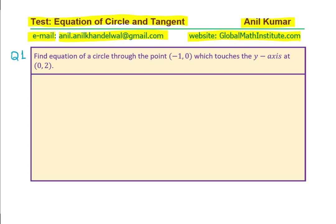Let us sketch the diagram — that really helps. We have a circle, and what is given to us is that it has a point where it just touches the y-axis, and that point is (0, 2), meaning the y-value is 2. Also, we are given that it passes through the point (-1, 0). So that is the location of the circle on the coordinate plane.